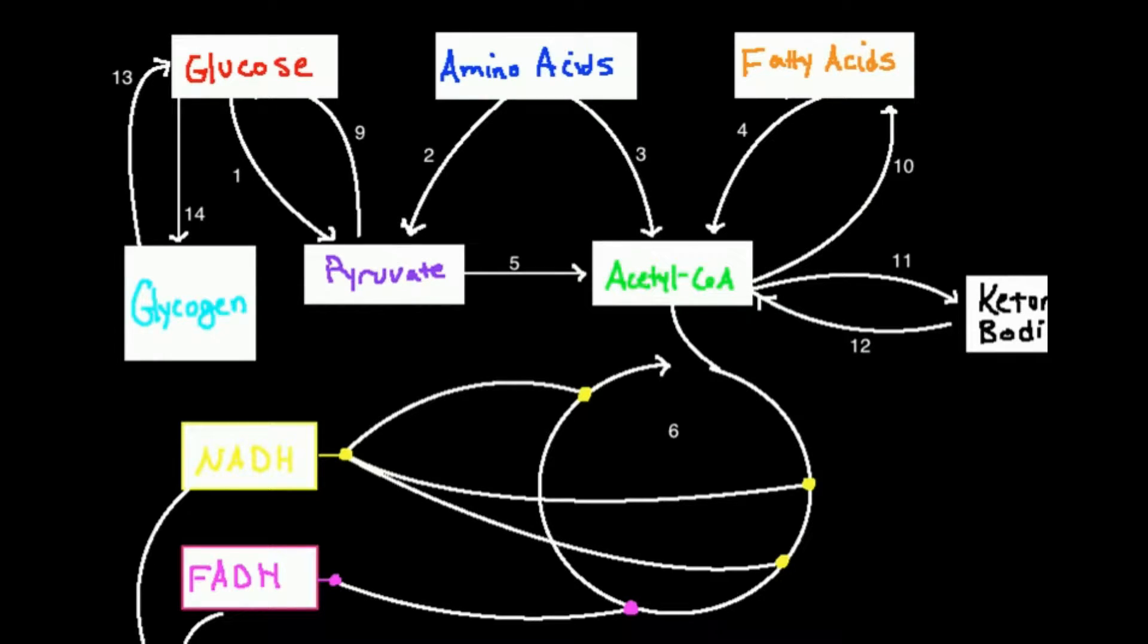The topic of the next few videos is going to be what I like to call a metabolic roadmap. So what we're going to do is we have three nutrients here at the top. These are our basic nutrients: glucose, amino acids, and fatty acids.